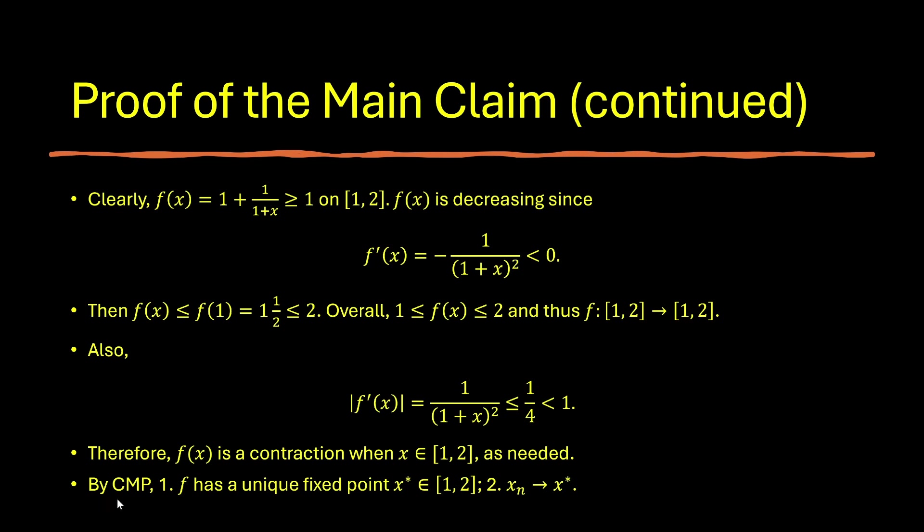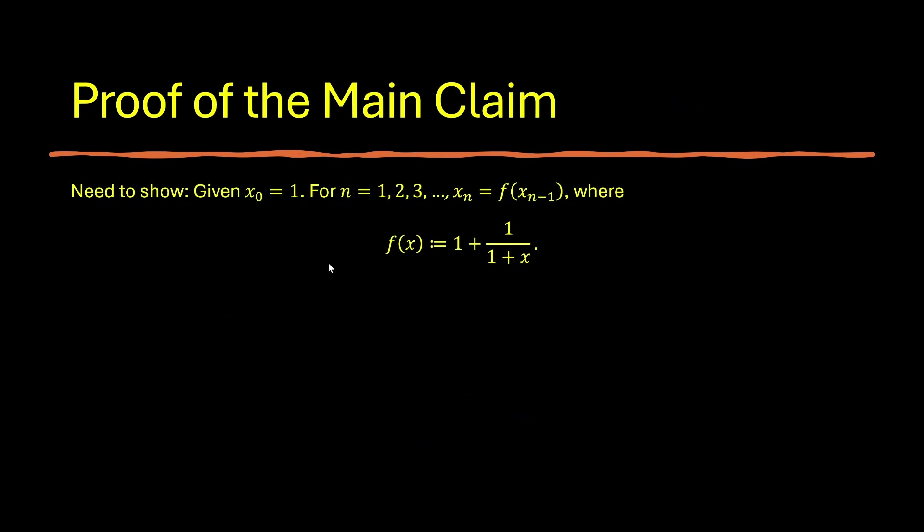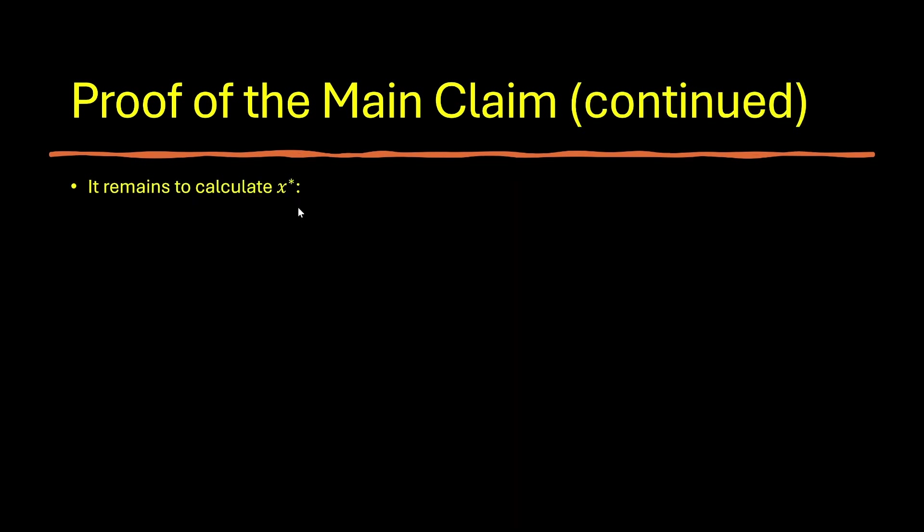By the contraction mapping principle, CMP, first, we know that f has a unique fixed point, x star, in the interval 1 to 2. And second, we know that the sequence xn converges to x star. Going back to how the sequence is defined, we see that the initial value x not being 1 is also important. It is in the closed interval 1 to 2. So therefore, it satisfies the hypothesis stated in the contraction mapping principle. So now it's just a matter of actually calculating the fixed point, which is a very straightforward algebra problem.